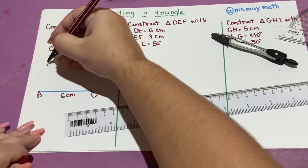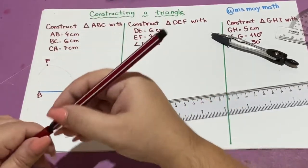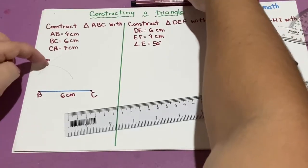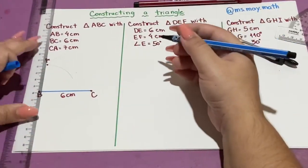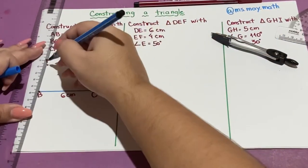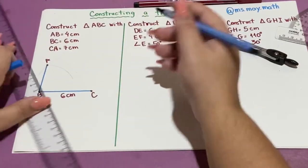I label the point A. And now I will join the dots. A, B, and A, C.